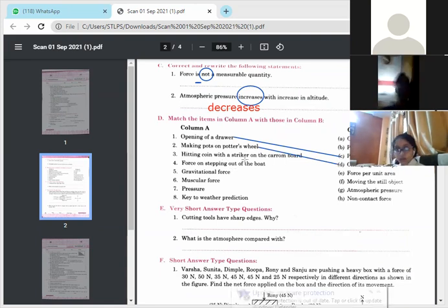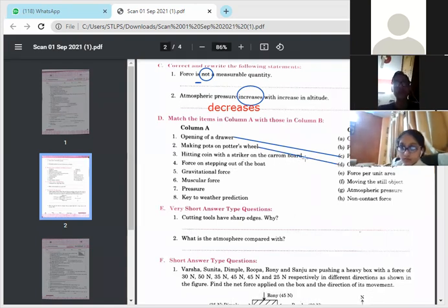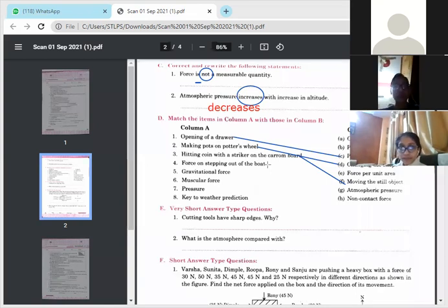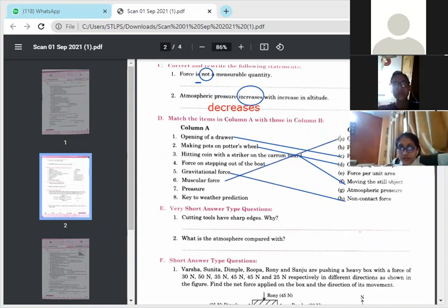D part. Hitting coin with a striker on the carom board. Hitting a coin. Moving the still object. Yes, moving the still object. F part. Force on stepping out of the boat. When you step out of the boat. Force per unit area. Yes. Force per unit area. No. No. That is a contact. Contact force. You are stepping out of the boat. Wait, this. Gravitational force. What's it? It's a non-contact force. Muscular force. Contact force. It's a contact force.